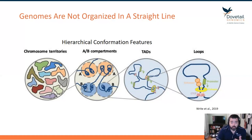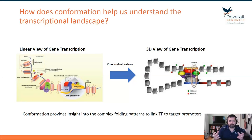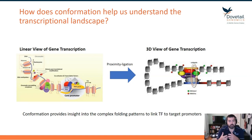Conformation — this hierarchical folding — really helps us make the leap from a linear view of the genome into a 3D-folded structure that helps us understand exactly which enhancer is engaged with what promoter and how that describes the regulatory landscape of a genome.